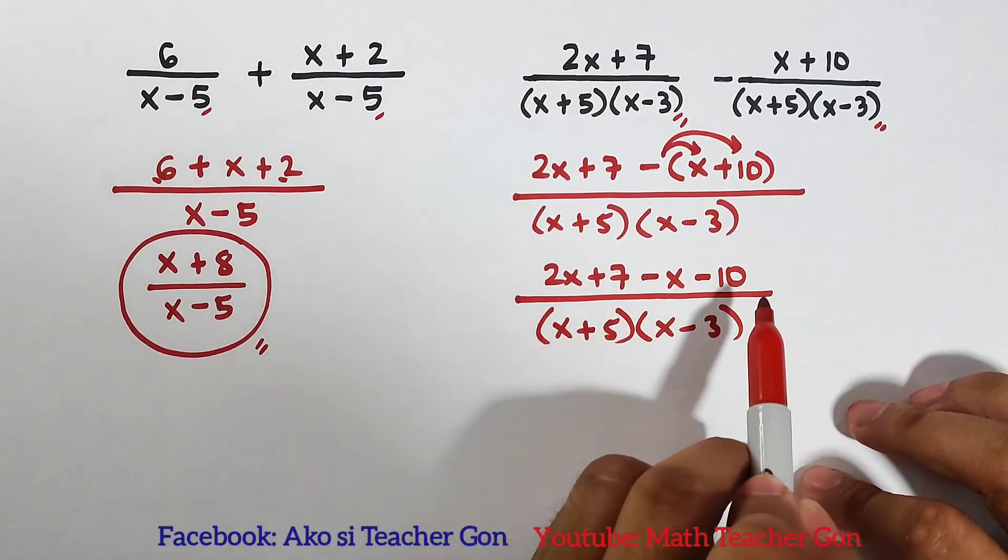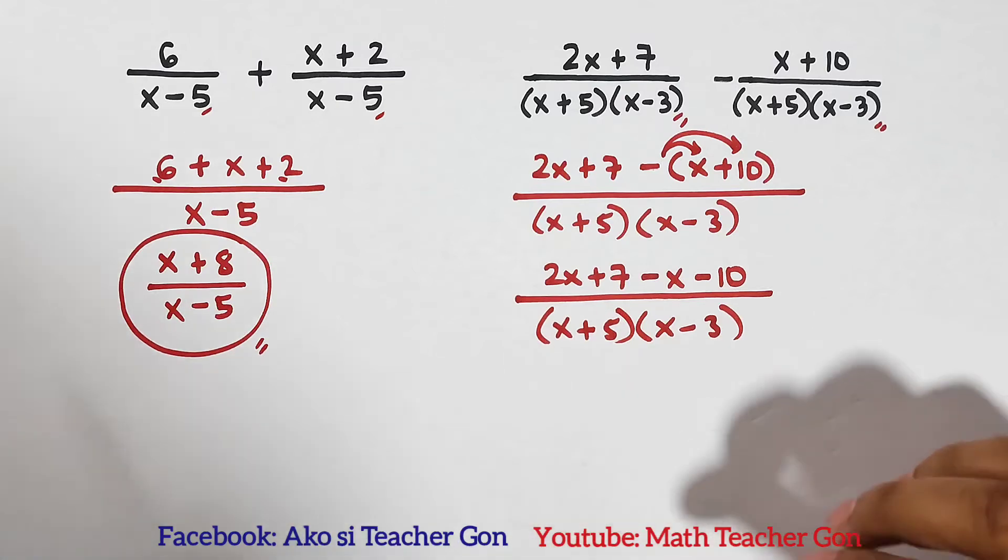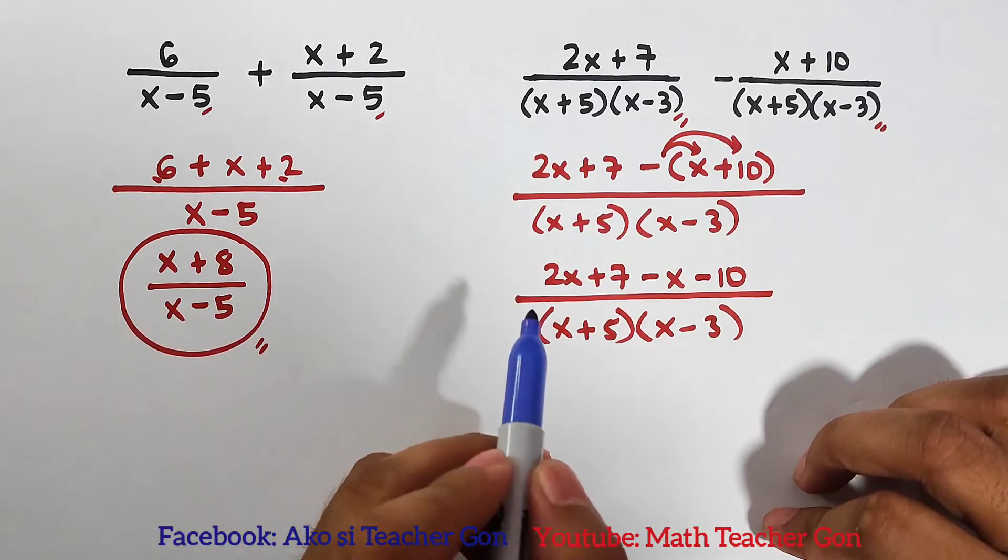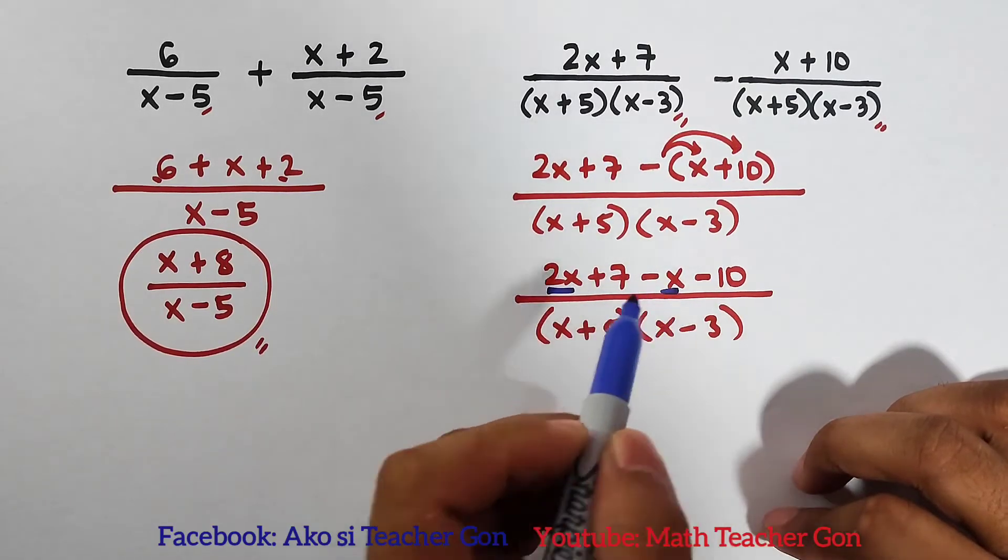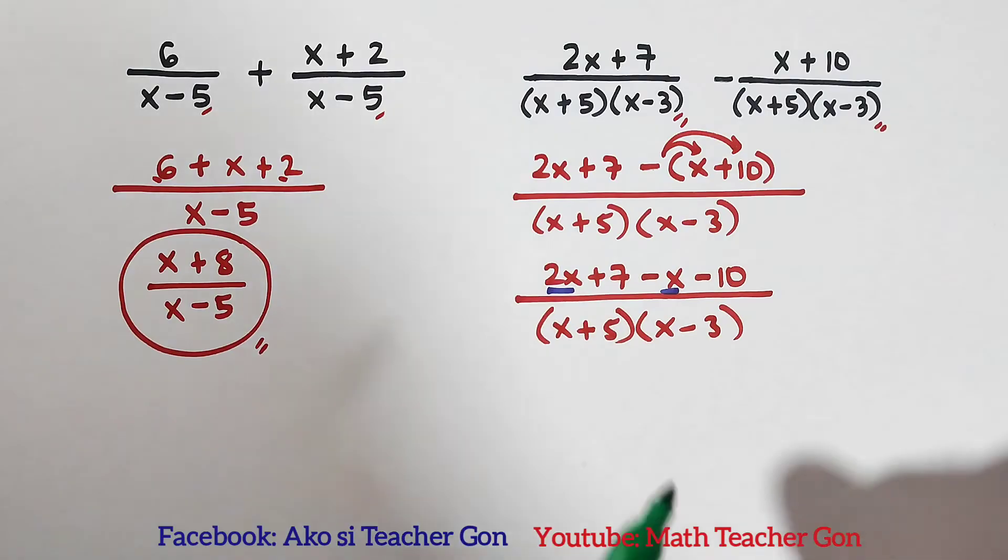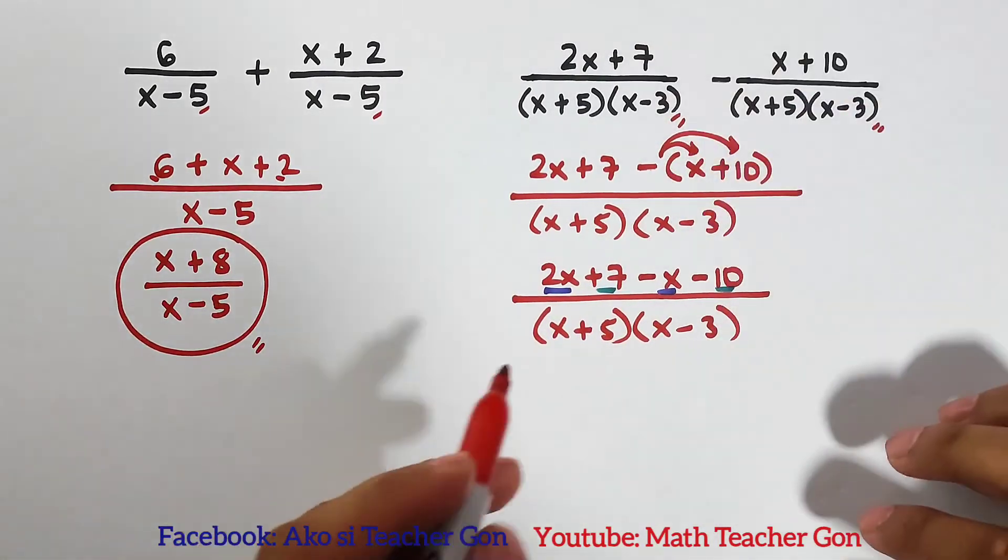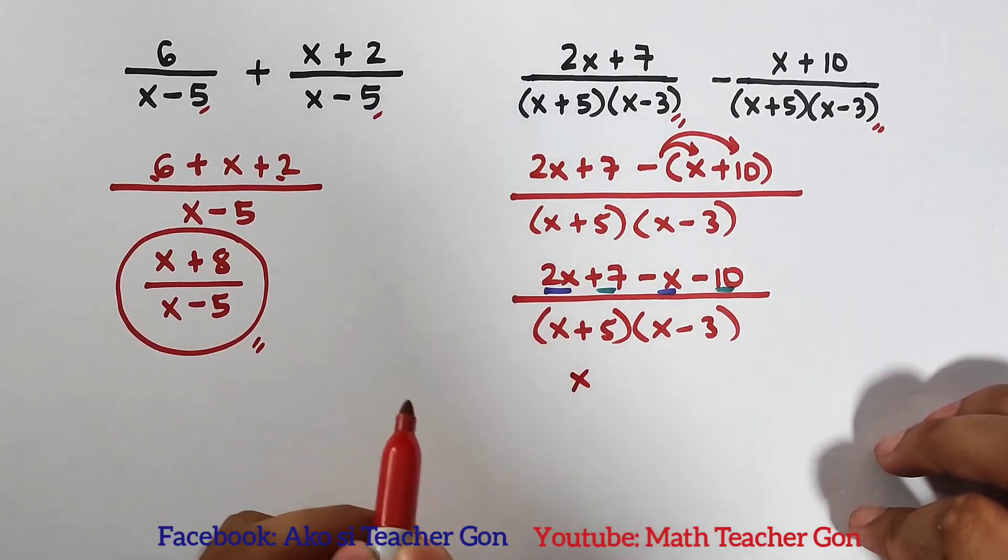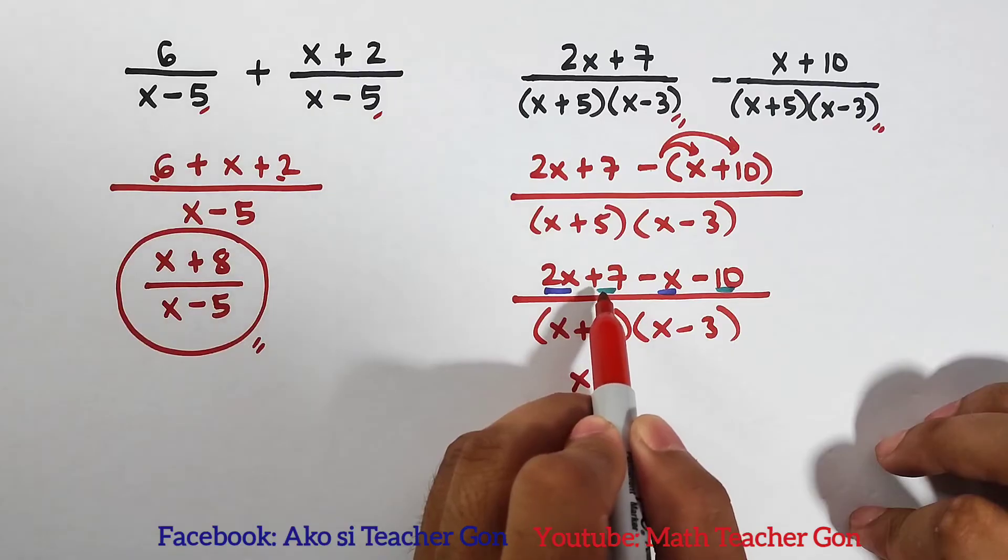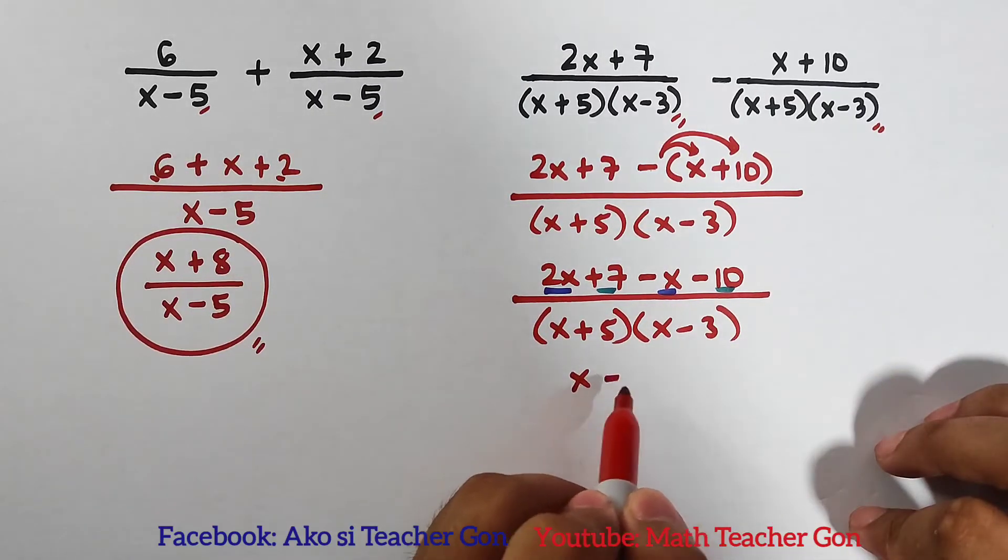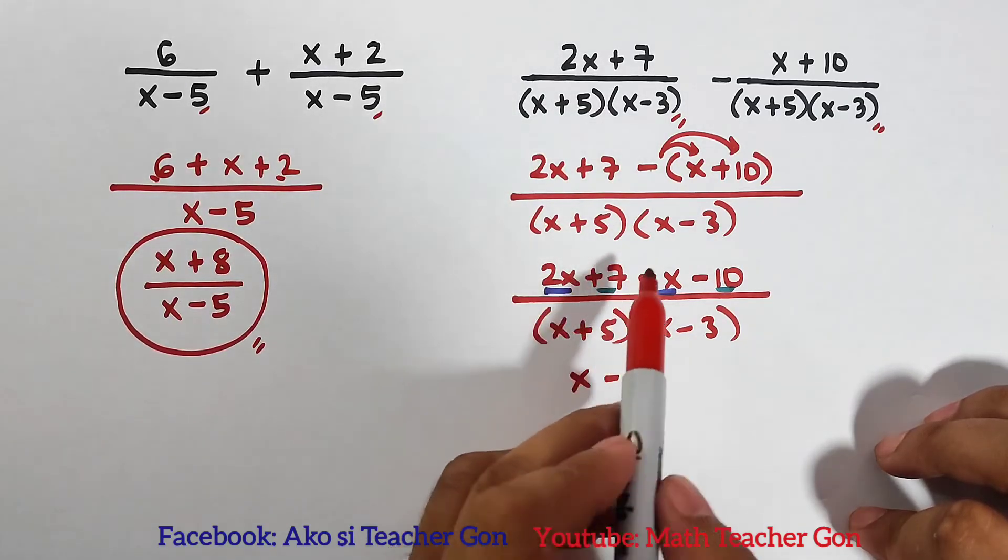What's next is you need to combine the common terms. Here, let's use some other color to emphasize the terms that we need to combine. We have here and here, and also we will combine this and this. So let's combine them. We have 2x minus x, that would be x. Then your positive 7 or 7 minus 10, that would be negative 3. So this is the combined terms of these four terms.